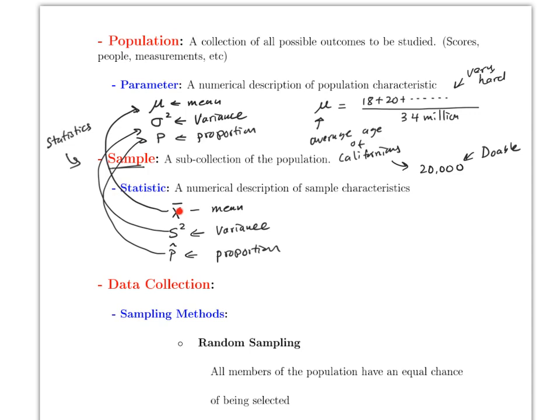What you'll mainly learn in this class is how to calculate these sample statistics, which are very easy and fast to find. Once you find them, you'll use probability to determine how close you are to the real population parameter. That's where making conclusions and inferences comes in — you might say you're 90% or 95% sure that the population value is between 20 and 25, for example. This is the main idea of the whole class.